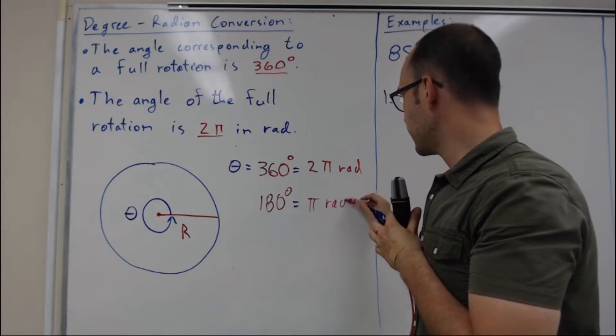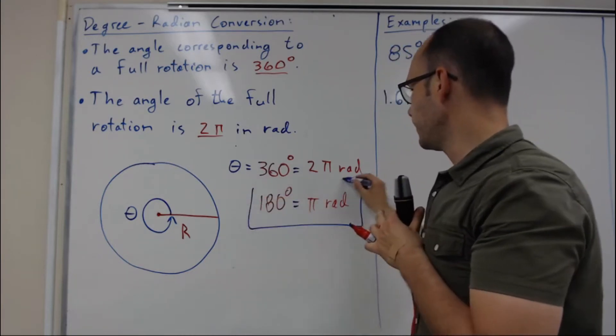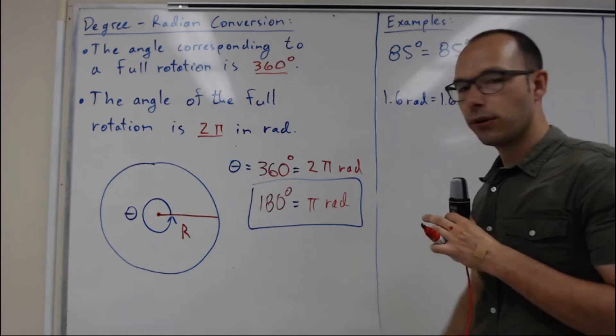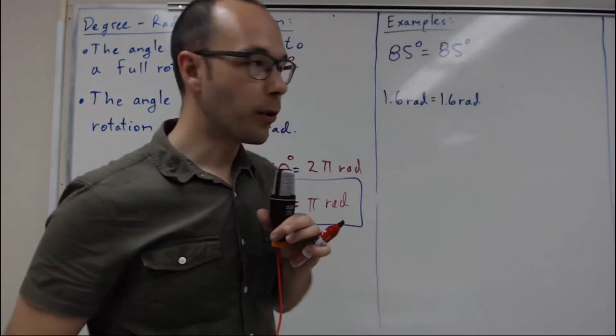We have a simpler conversion factor: 180 degrees equals π radians. We're going to use this for our conversions.